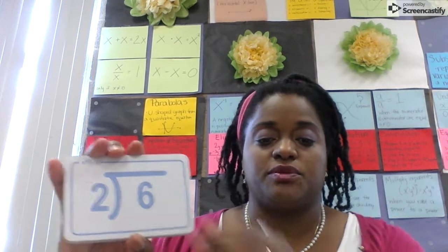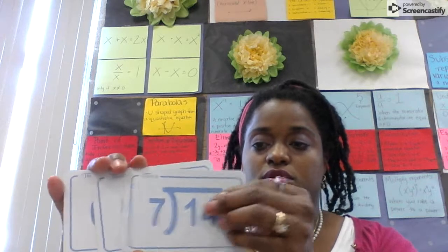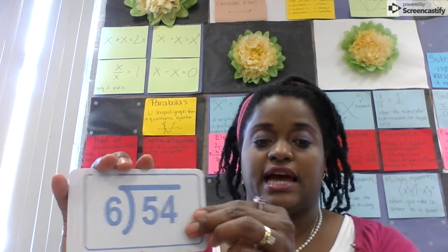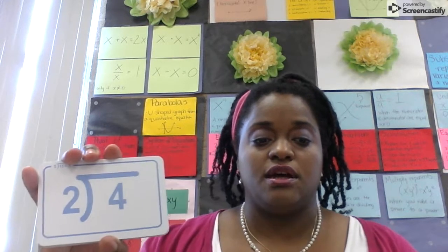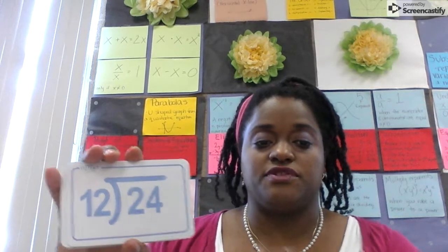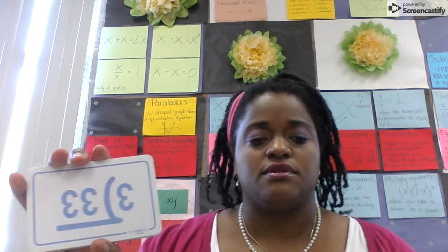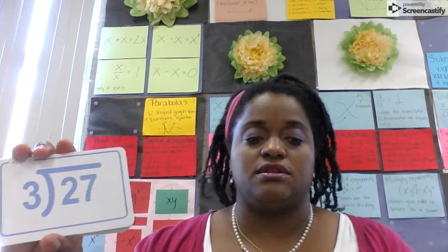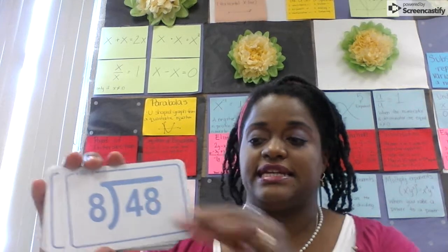6 divided by 6 is 6. 6 divided by 2 is 3. 14 divided by 7 is 2. 60 divided by 5 is 12. 54 divided by 6 is 9. 27 divided by 9 is 3. 4 divided by 2 is 2. 24 divided by 12 is 2. 20 divided by 8 is 8. 48 divided by 8 is 6.